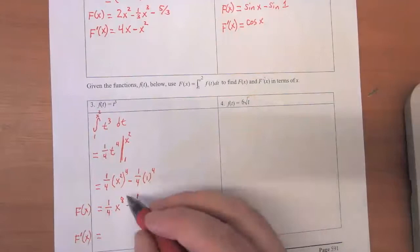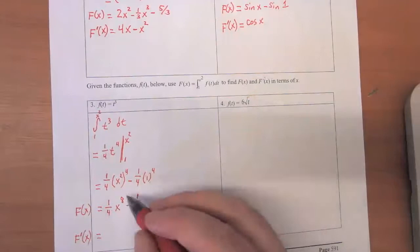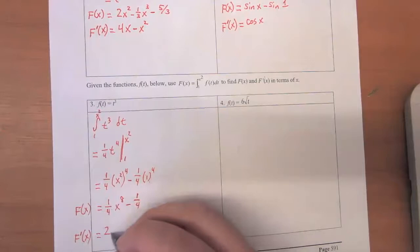Well, once again, we're just going to use the power rule. Eight times one quarter is two times x to the seventh power. And this is a constant. It just vanishes.